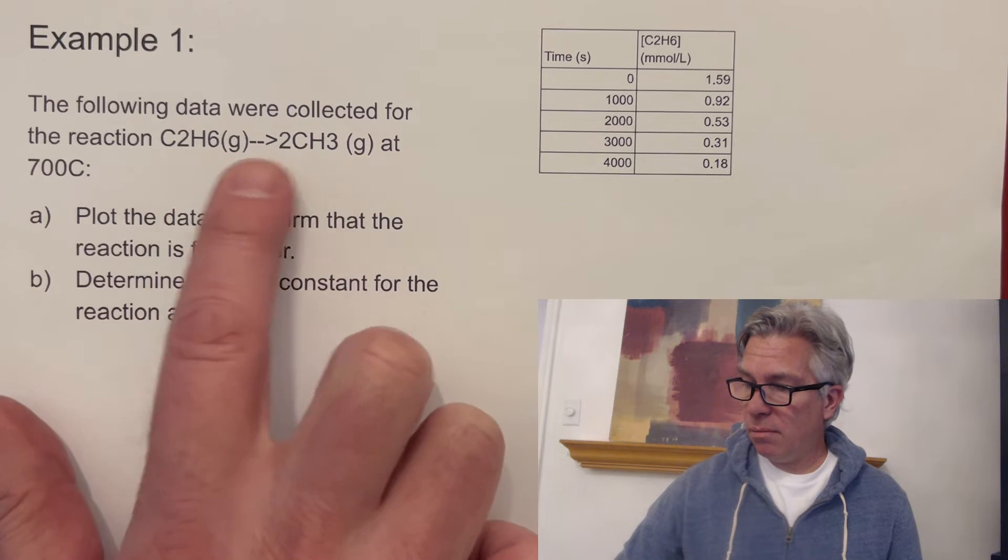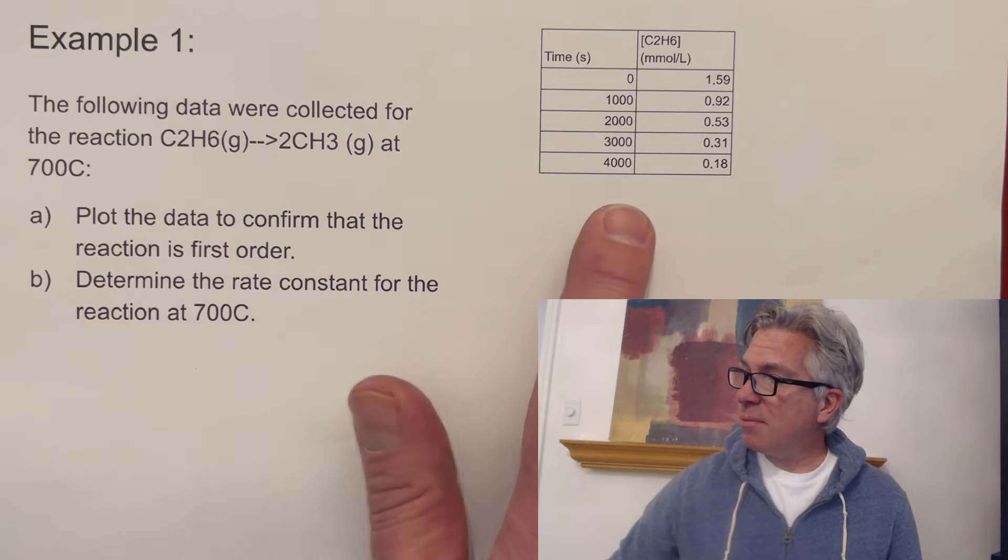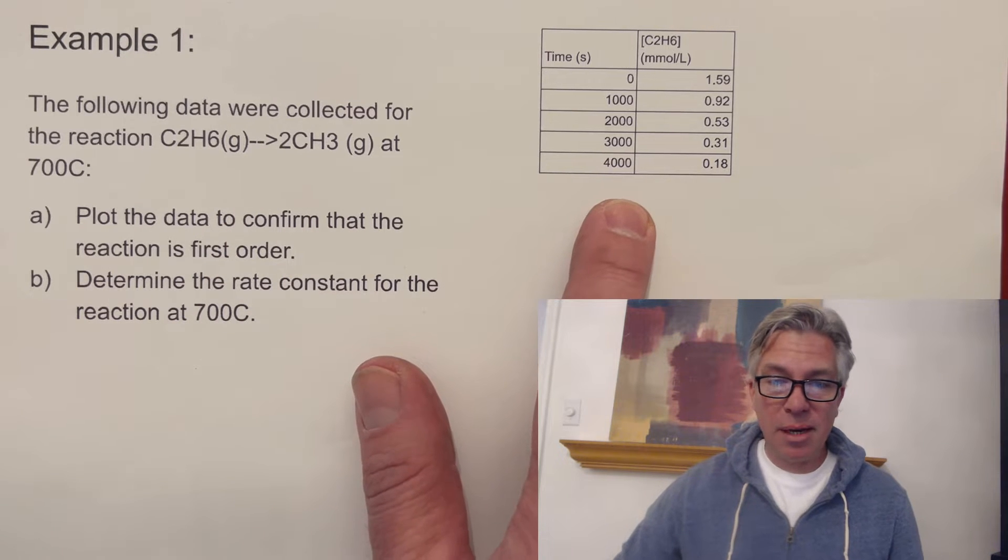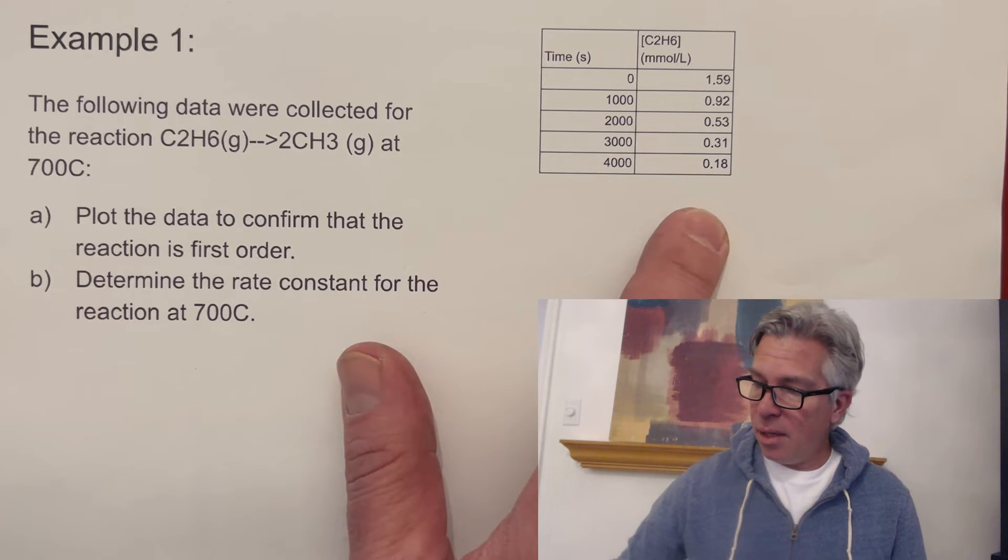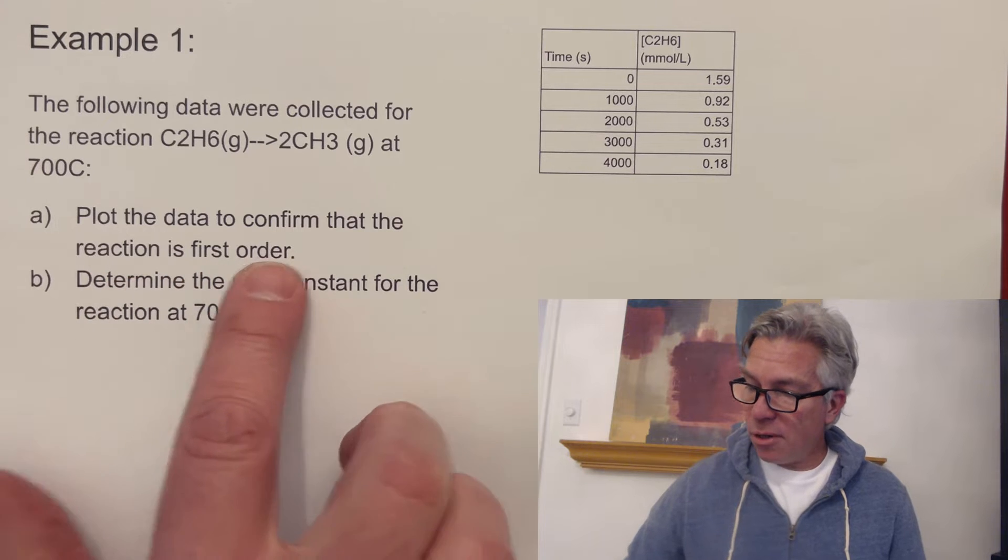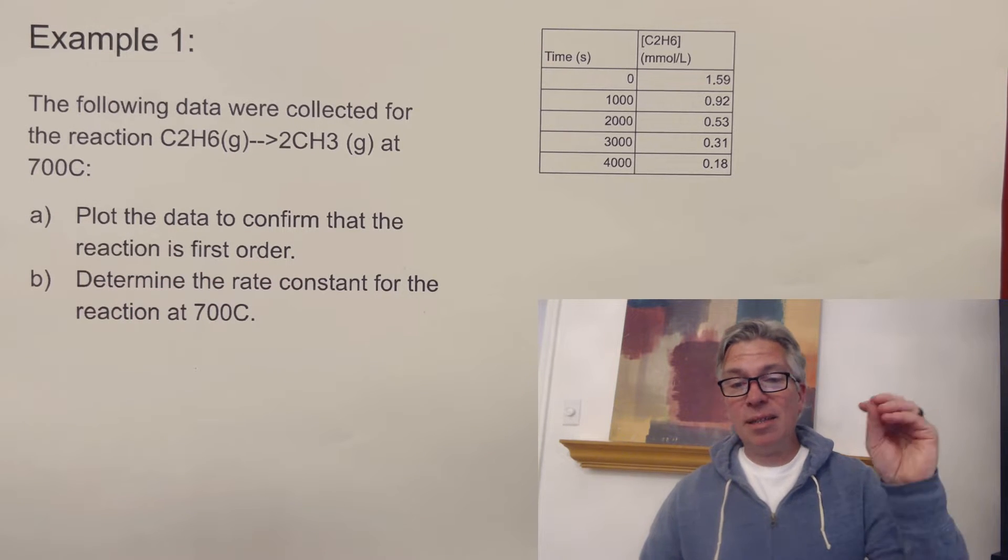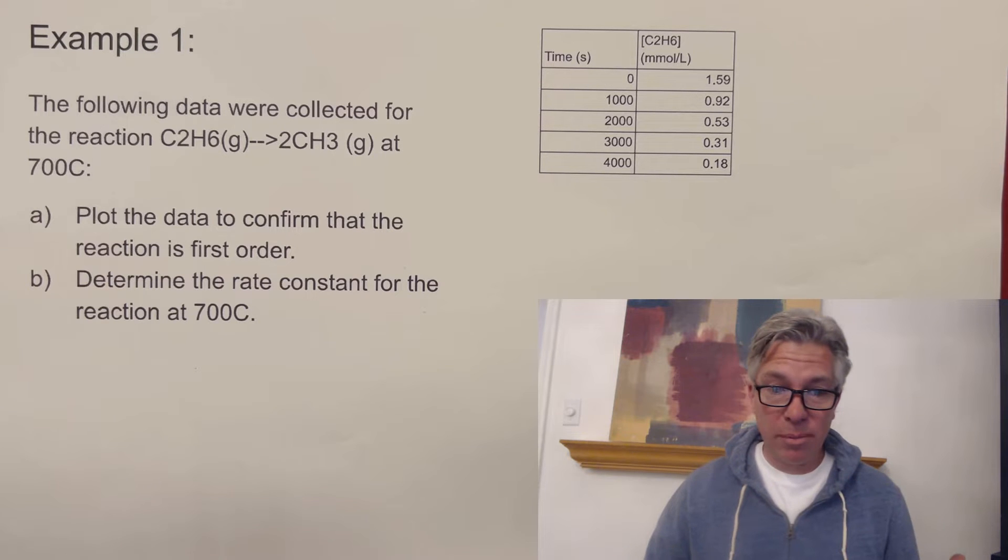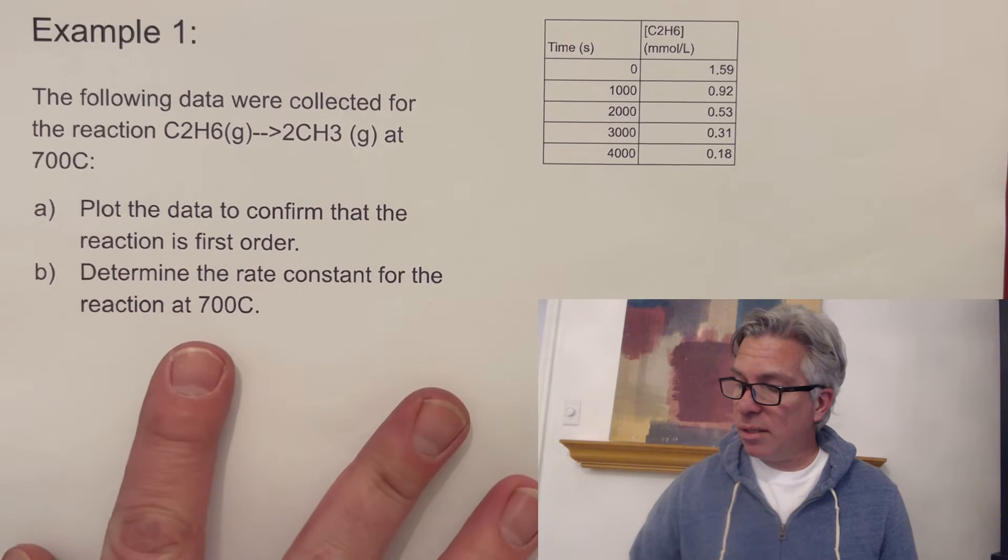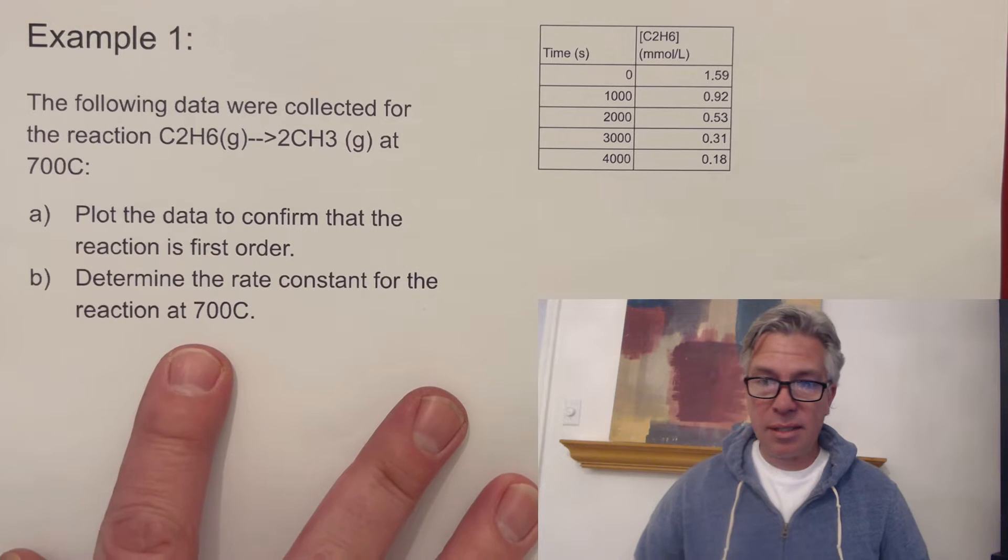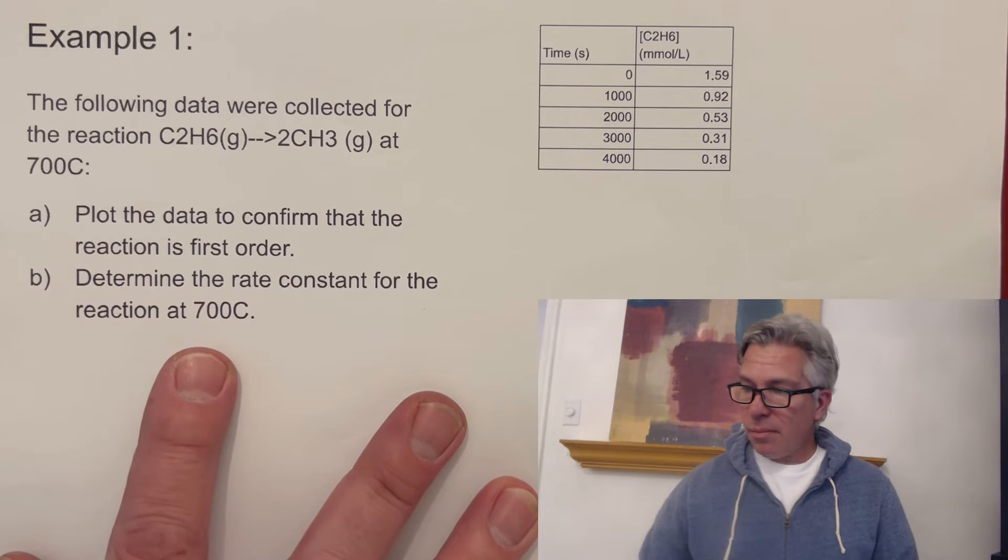That's my little chart from my spreadsheet that I put the data in. Plot the data to confirm the reaction is first order. So right now they're actually telling me that that is first order. And then we're going to determine the rate constant at this 700 degrees Celsius temperature.